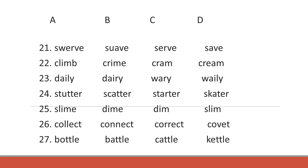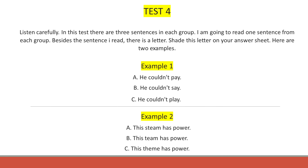Number 27. Cuttle. Test 4. Listen carefully. In this test there are three sentences in each group. I'm going to read one sentence from each group. Beside the sentence I read there is a letter. Shade this letter on your answer sheet.